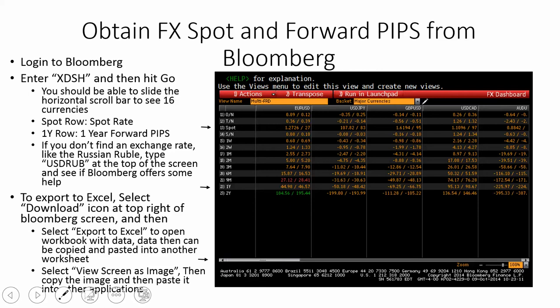Once you're in Bloomberg, you can either use the FPF keys — the special function keys — and find, say, Currency Go. Once you're in there, look for a dashboard or other types of functions. I'll give you some hints to find the more popular areas. So once you're in Bloomberg, come up to the top of the screen and type in XDSH and hit enter.